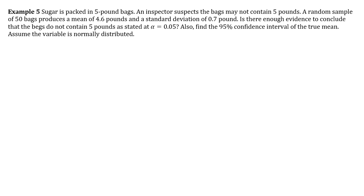Example 5: sugar is packed in 5-pound bags. An inspector suspects the bags may not contain 5 pounds. A random sample of 50 bags produces a mean of 4.6 pounds and a standard deviation of 0.7 pounds. Is there enough evidence to conclude that the bags do not contain 5 pounds, with alpha equal to 0.05? We will also find the 95% confidence interval of the true mean, and we assume the variable is normally distributed.